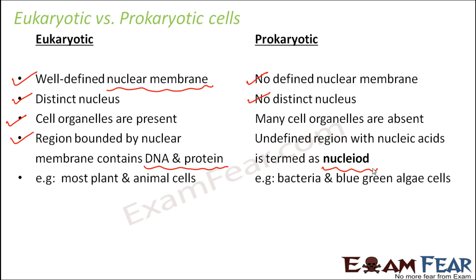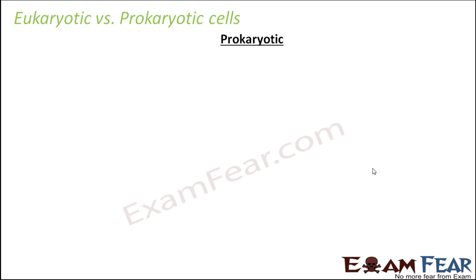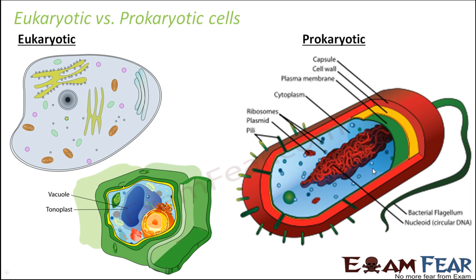Examples of eukaryotic cells include all plant and animal cells. Prokaryotic examples include bacteria and blue-green algae. In eukaryotic cells you can see the nuclear membrane, the nucleolus, and all other cell organelles, whereas in prokaryotic cells there is no nucleus or nuclear membrane - just one region where the entire genetic material is located.